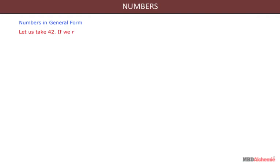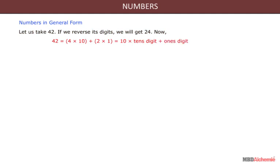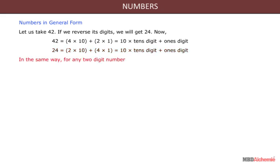Let us take 42. If we reverse its digits we will get 24. Now 42 is equal to 4 into 10 plus 2 into 1, which is equal to 10 into tens digit plus ones digit. And 24 is equal to 2 into 10 plus 4 into 1, which is equal to 10 into tens digit plus ones digit. In the same way, for any two digit number ab, ab is equal to a into 10 plus b into 1, and ba is equal to b into 10 plus a into 1.